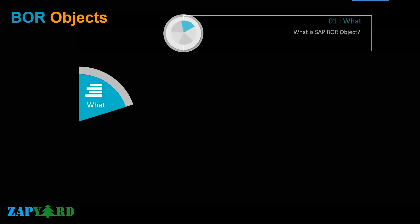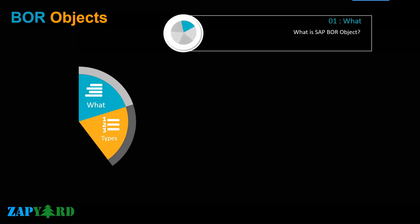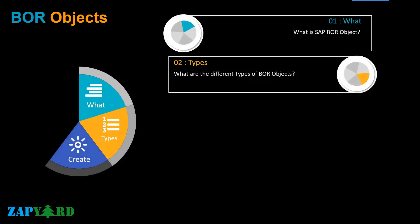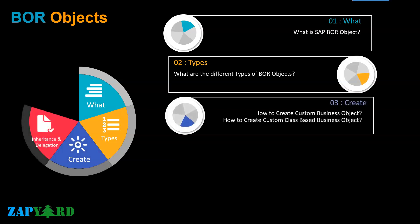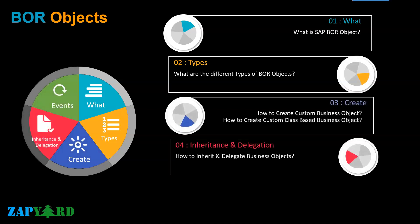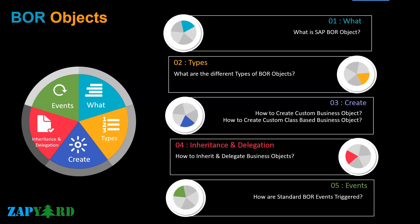Business objects, or more appropriately, Business Object Repository (BOR) objects, integrate the data and functions of business applications into the workflow. In simple words, business objects are an important interface between the workflow and the business application in SAP components. Do not worry — our trainer will clarify with practical use cases what BOR objects are.